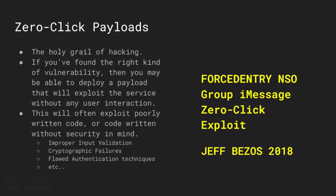Zero-click payloads are kind of the jackpot of payloads, because here you don't need any kind of user interaction — you just send the payload and it works. This is known as the 'holy grail' of hacking. There is the ForcedEntry vulnerability on iPhone and the Jeff Bezos vulnerability from 2018. With zero-click payloads, you deploy the payload and it exploits the specific service you want without any user interaction. These types of payloads are often the result of poorly written code or code written without security in mind, such as improper input validation, cryptographic failures, or weak authentication.